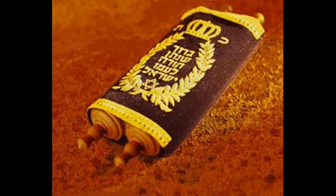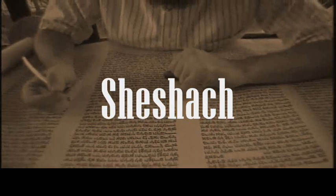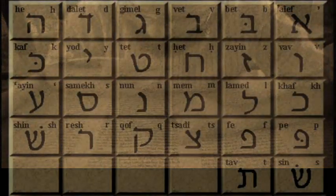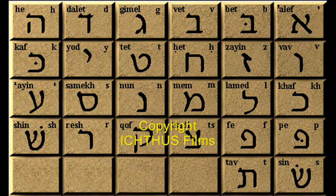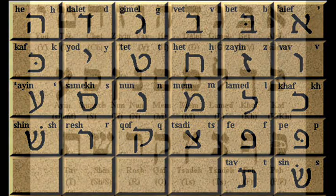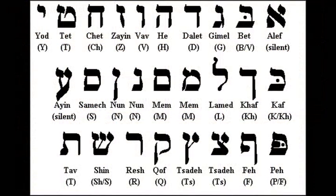Jeremiah gives a strange name to the king of Babylon, calling him the king of Shishak. The prophet was concealing the meaning of his prediction from all but the initiated. He did this by a specific placement of the Hebrew alphabet. So in place of using the second and twelfth letters of the Hebrew alphabet from the beginning to form the word Babylon, he wrote the second and twelfth letters of the Hebrew alphabet from the end to form the word Shishak.